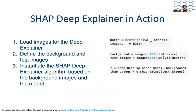So how does the SHAP Deep Explainer work? First, we must load some images for the explainer and then define the background model and test images for the Deep Explainer algorithm. As background images, we use 100 images out of a batch of 128, while for the test images, the next five images in the batch are used. We can then instantiate our Deep Explainer algorithm based on the background images and the model. We are using a small number of samples here because the Deep Explainer algorithm can be computationally very expensive.